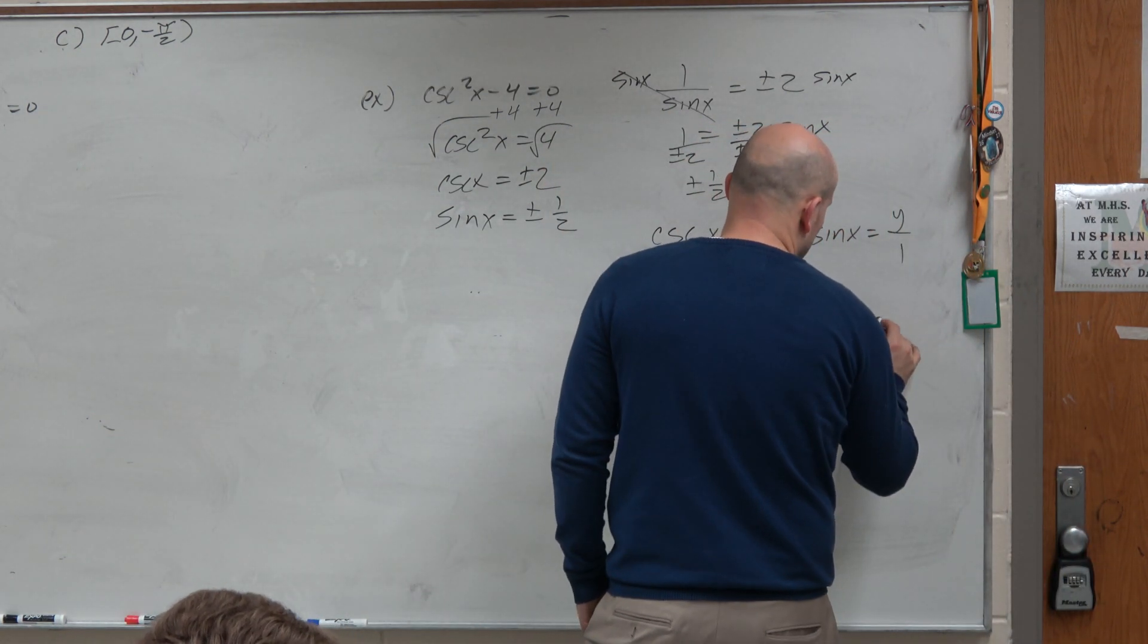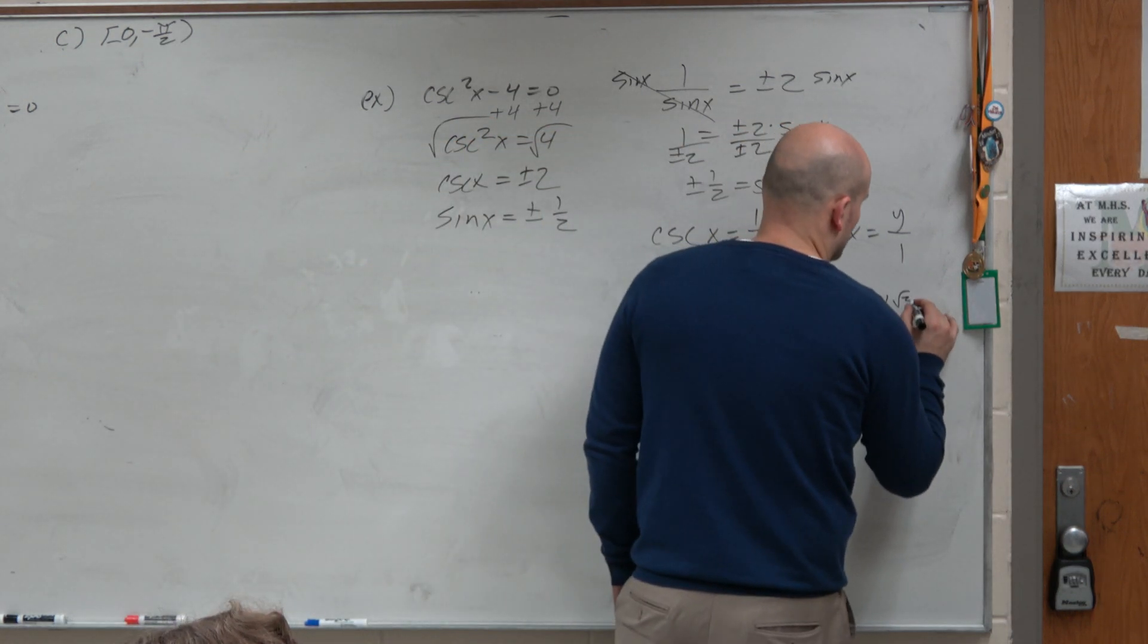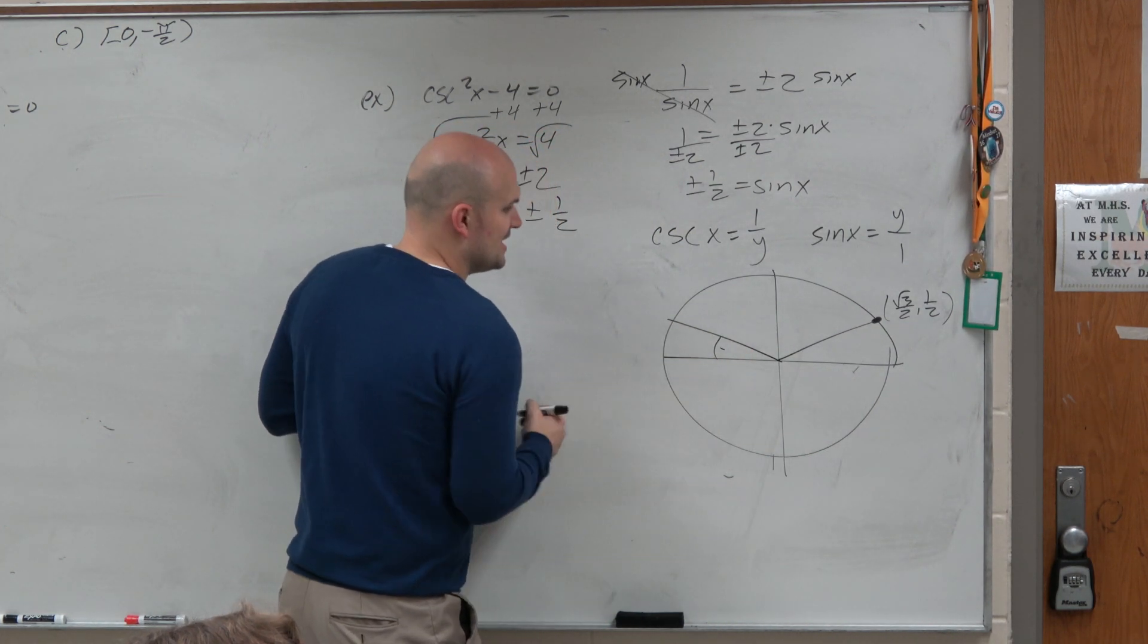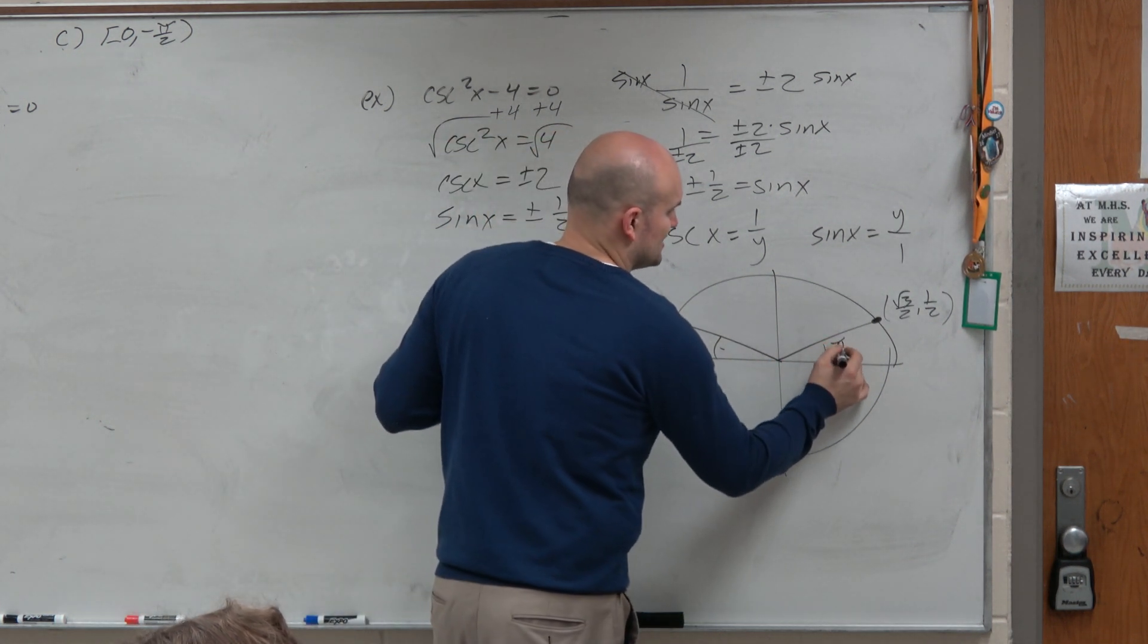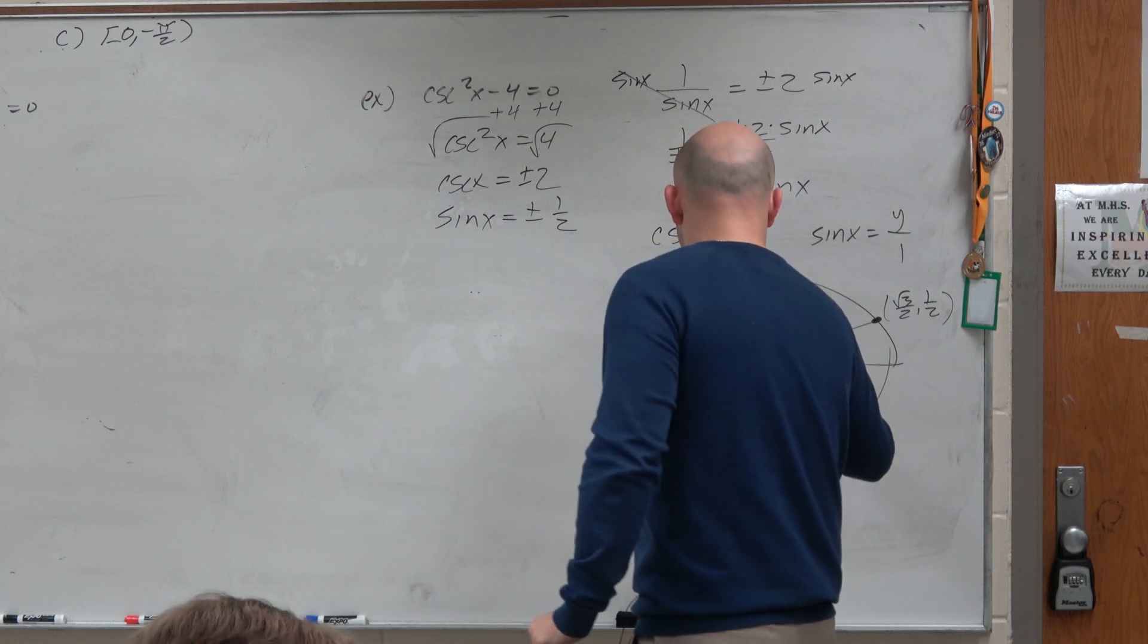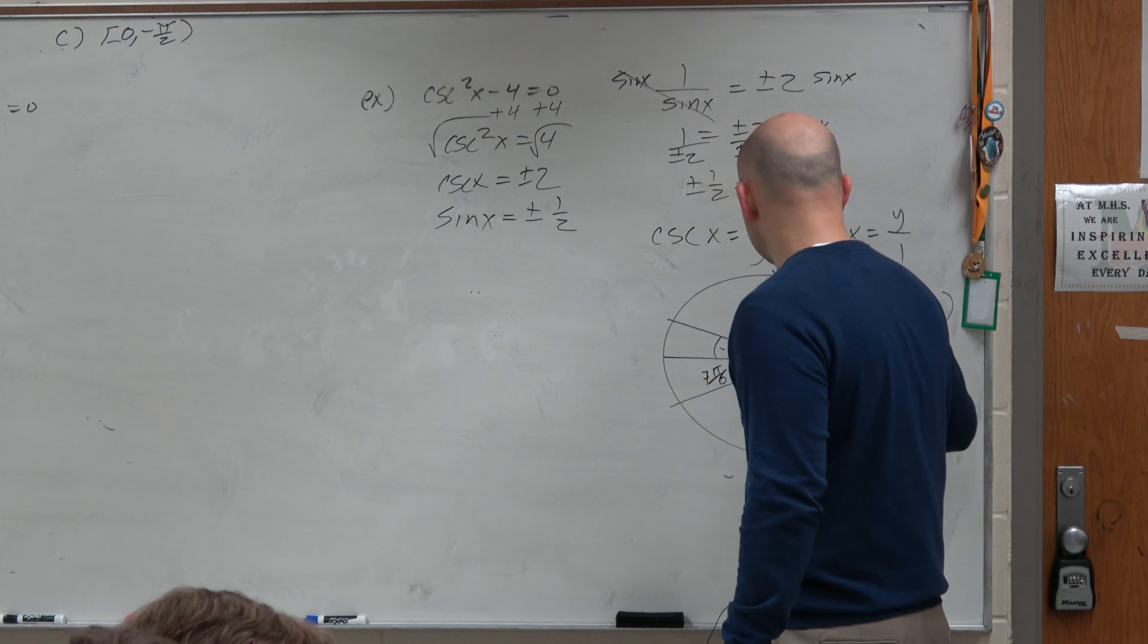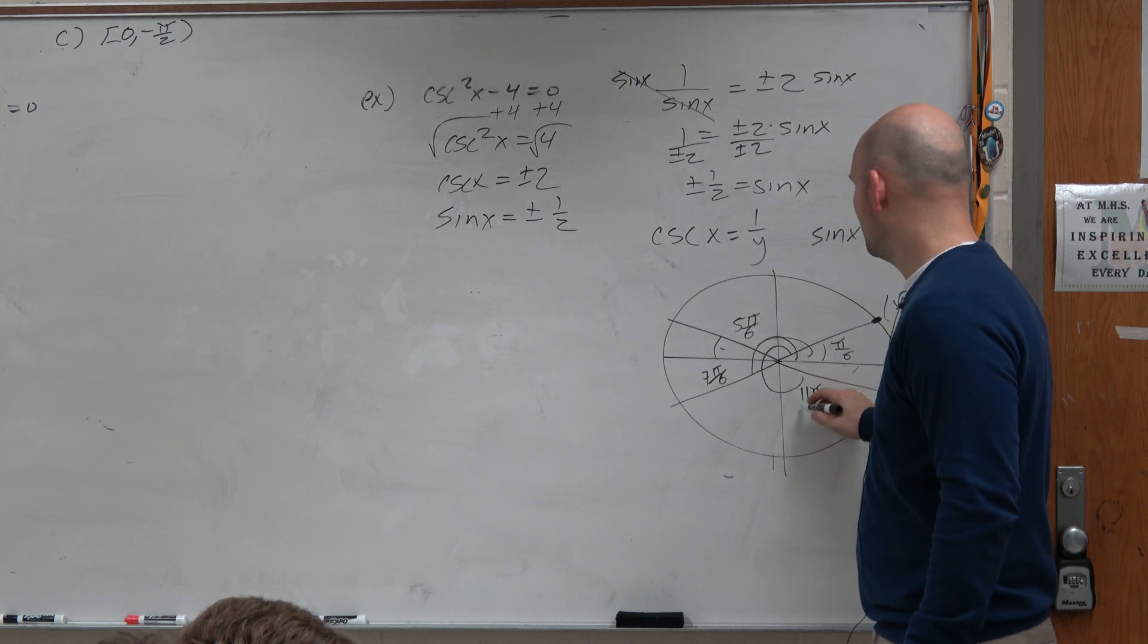right? That was square root of 3 over 2 comma 1 half. So if pi over 6 works, that means all the same reference angle. This one has to work, which would be 5 pi over 6. Do we have pi over 6? 5 pi over 6. Then we have 7 pi over 6. And then we have pi over 6 short of 2 pi, which is 11 pi over 6.